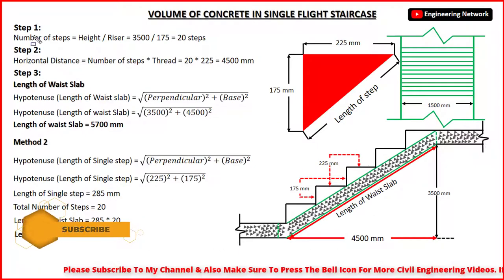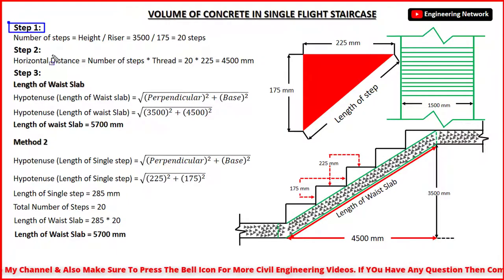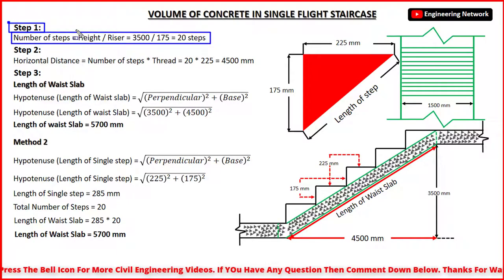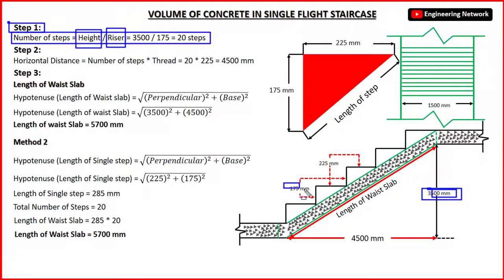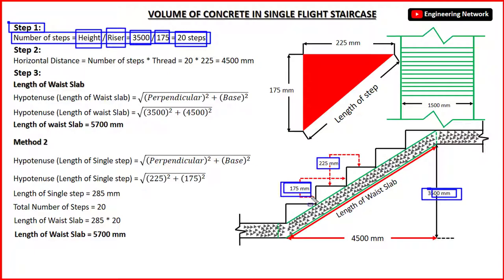Step number 1 is how to calculate the total number of steps in a staircase. The total number of steps is equal to the height of staircase from ground floor divided by the riser of a single step. Here the height of staircase is equal to 3500 mm and the riser of single step is equal to 175 mm. So the total number of steps is equal to 3500 divided by 175, which gives 20 steps. In this single flight staircase I will need to provide 20 steps with a tread of 225 mm and riser of 175 mm.